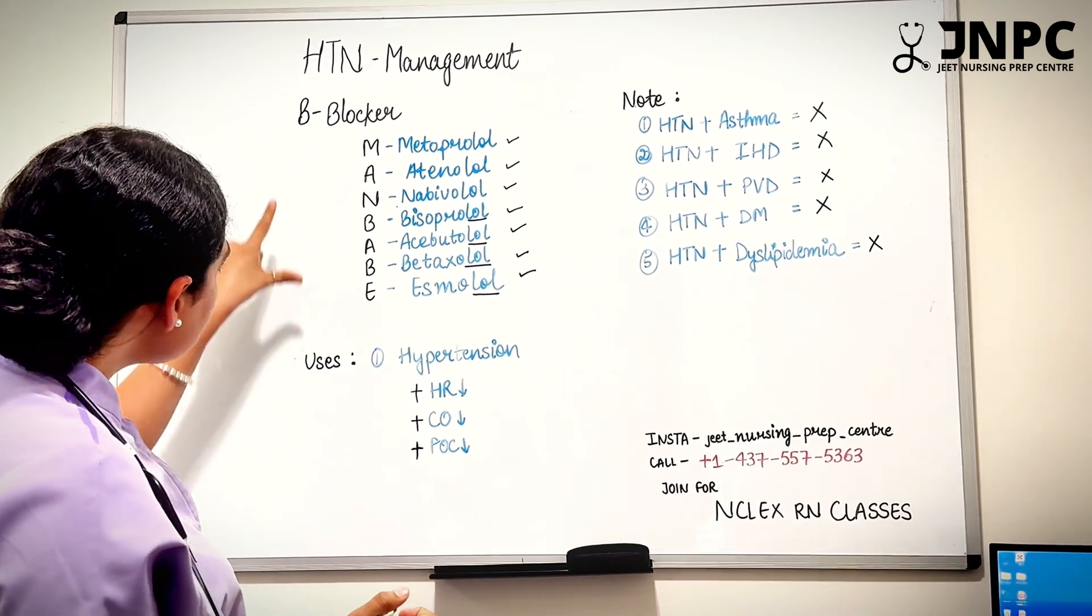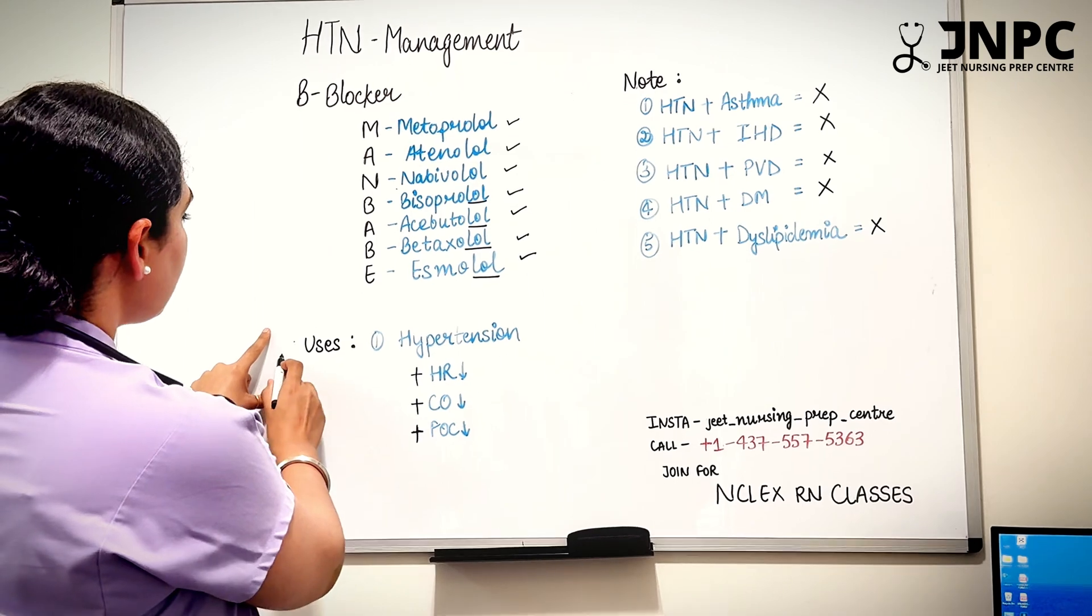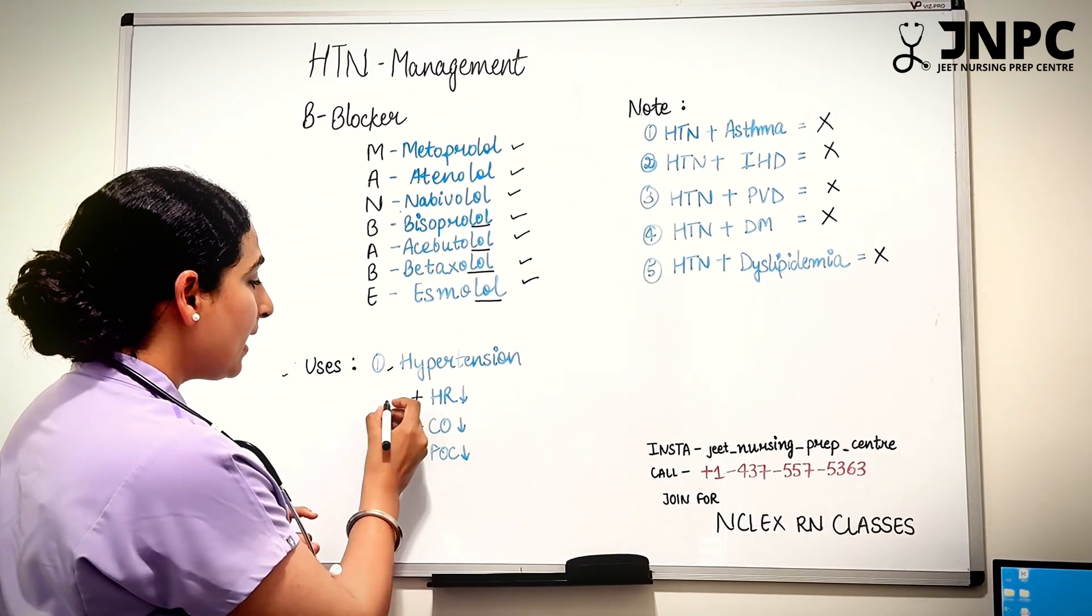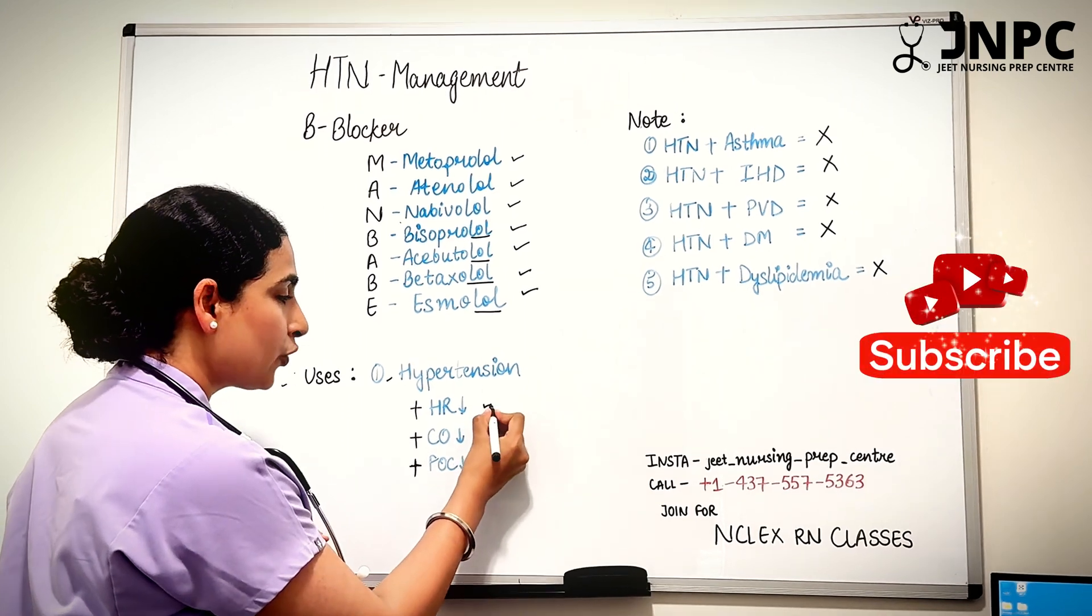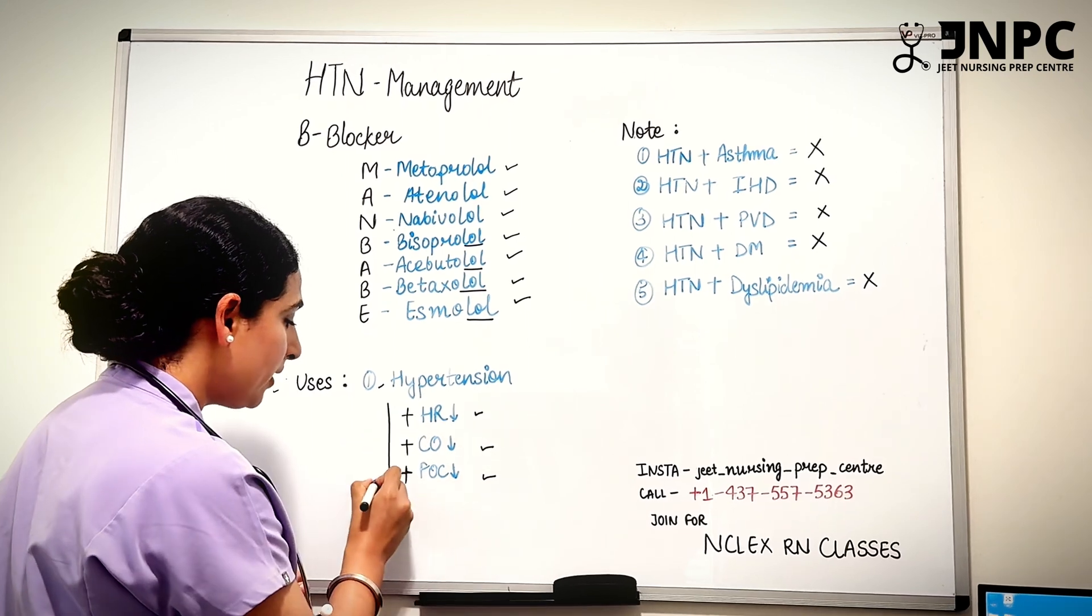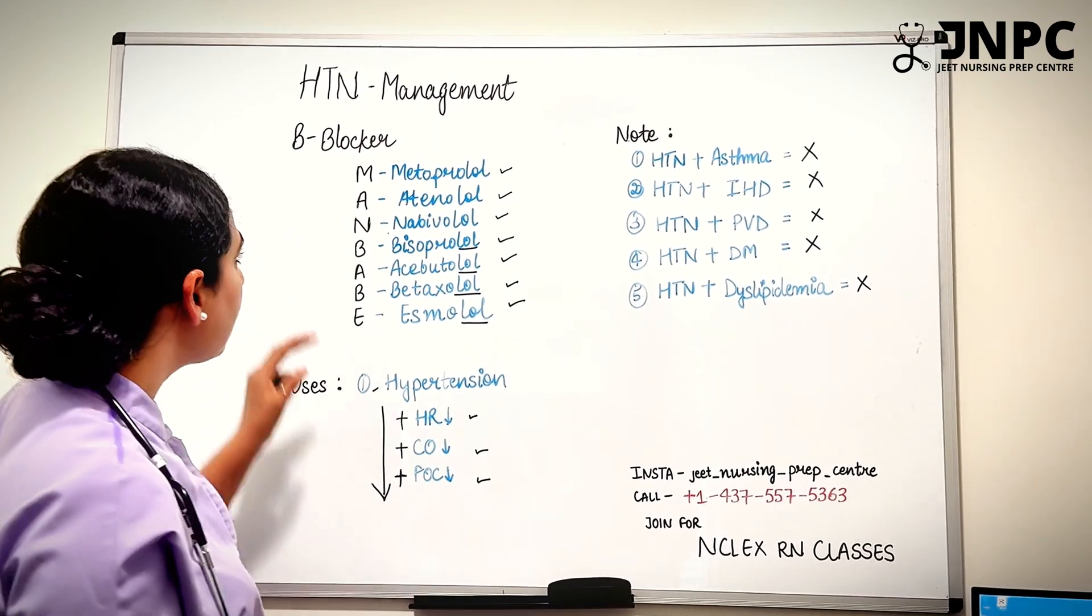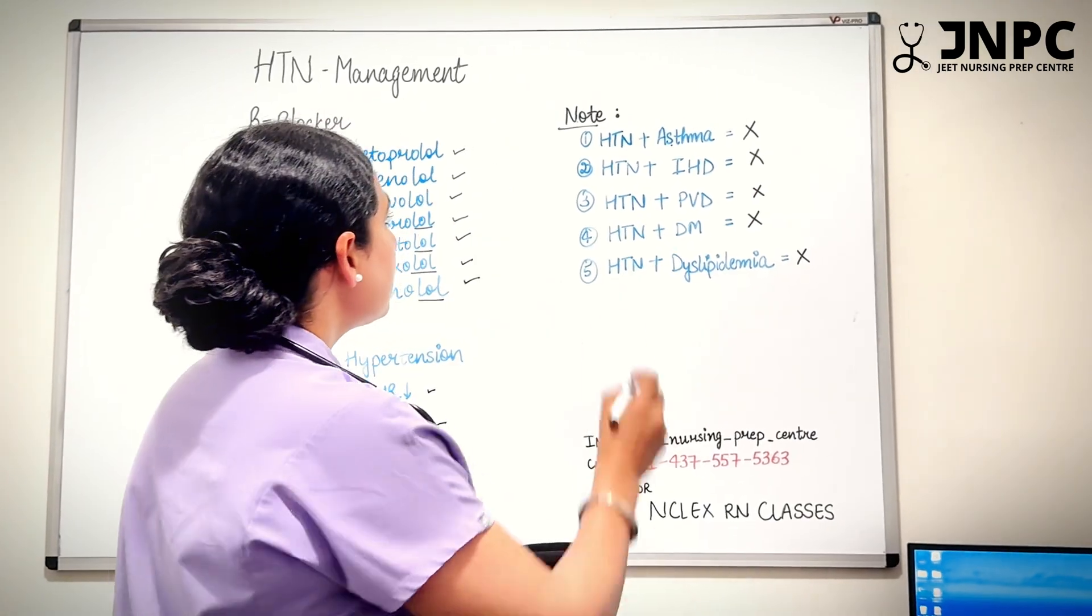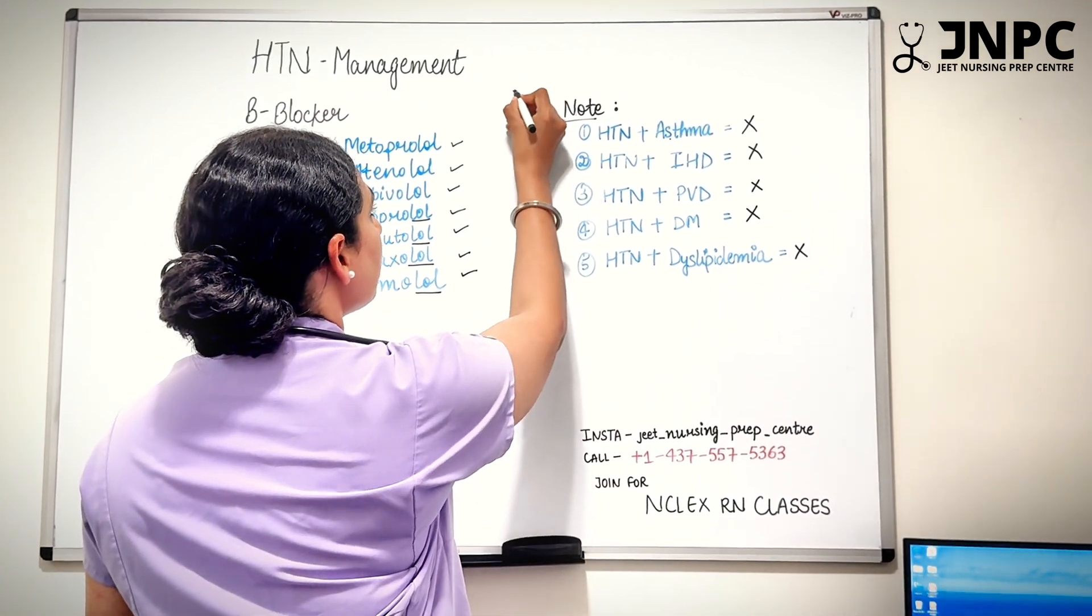Where do we use these beta blockers? We use beta blockers in treating hypertension. How do they actually act? They decrease heart rate, decrease cardiac output, and decrease force of contraction. Everything will be down. That is the basic action of beta blockers. This is an important note if you're planning to crack NCLEX. If your patient has hypertension, we give beta